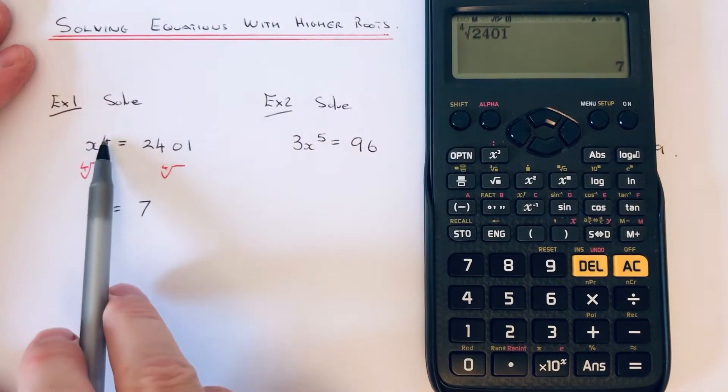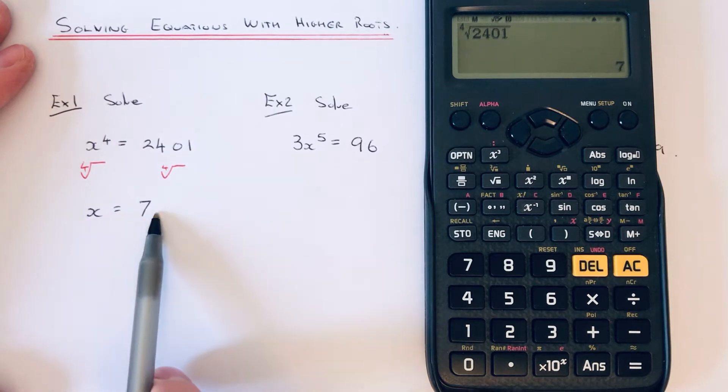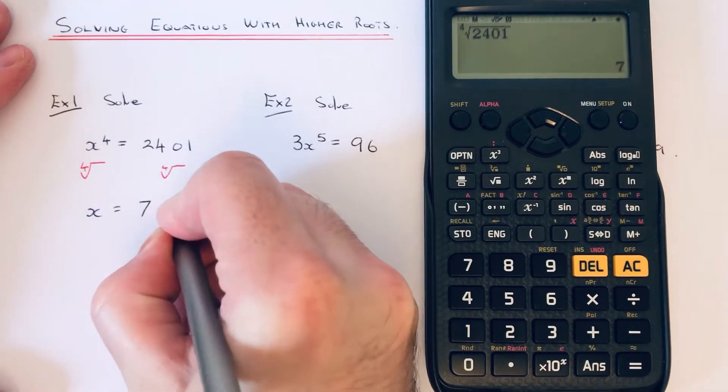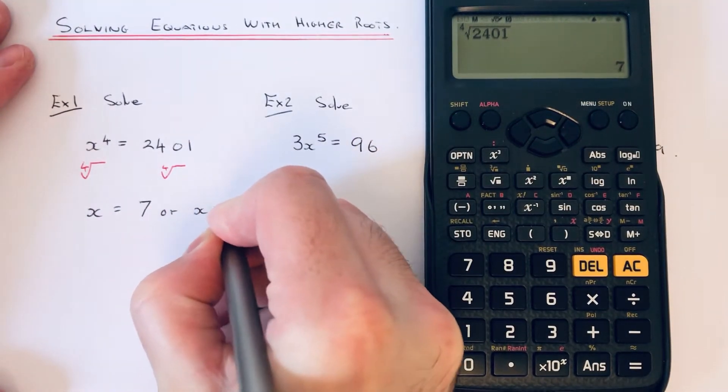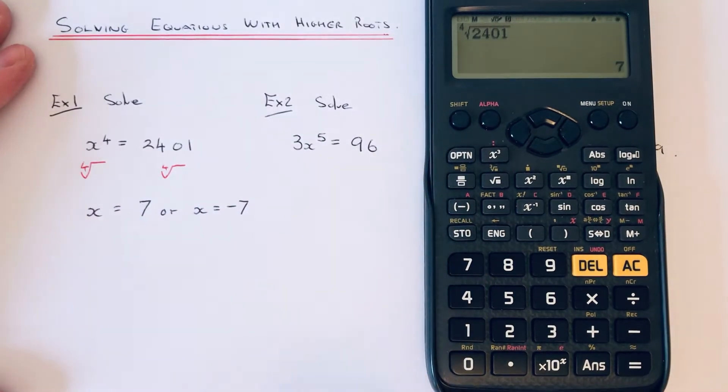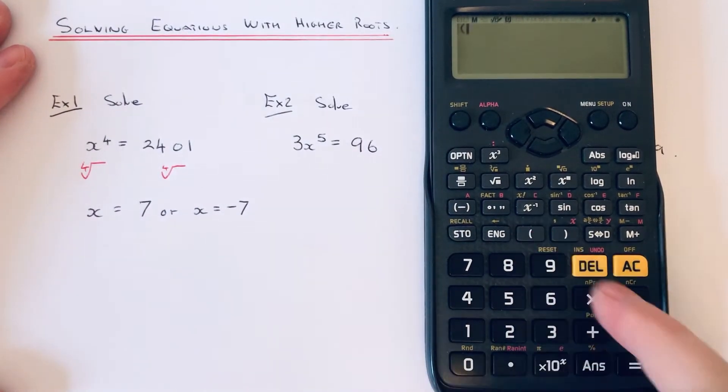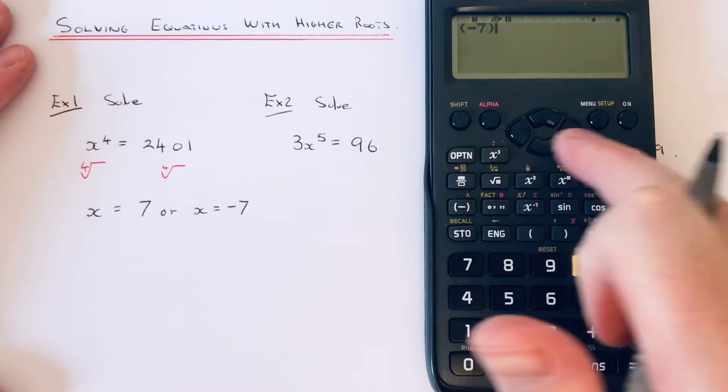But there's one thing to remember: it's actually two solutions. When the power is even, you can have x equals positive 7 or x equals negative 7. The reason for this is because minus 7 to the power of 4 also gives us 2,401.